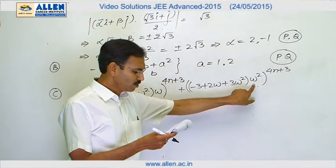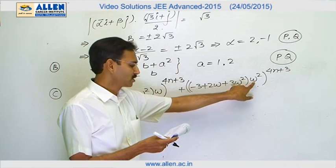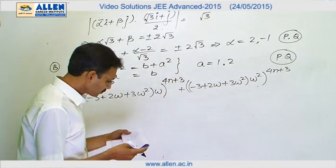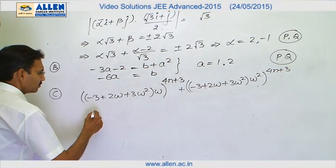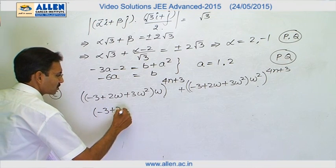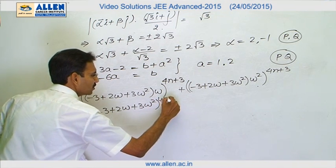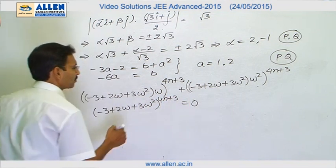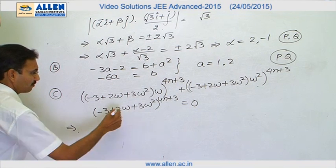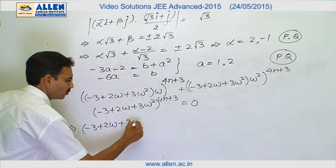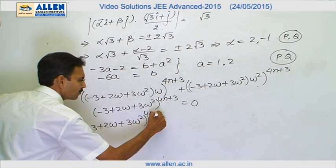you can see it is minus 3 omega square. This is 2 and then 3 omega and then 3 omega and the last term as it is minus 3 plus 2 omega plus 3 omega square. So this trick made this problem very simple. I will take it common minus 3 plus 2 omega plus 3 omega square raised to the power 4n plus 3.